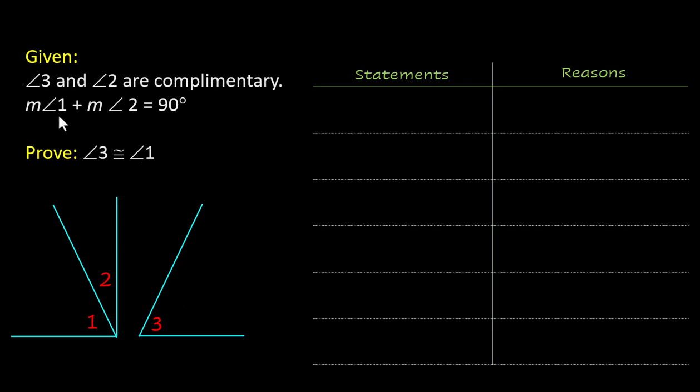We're told that the measure of angle 1 plus the measure of angle 2 also equals 90 degrees. We can see that they're right next to each other and it looks like that was a right angle but now this is how you know for sure you have to be told and we are asked to prove that angle 3 is congruent to angle 1.